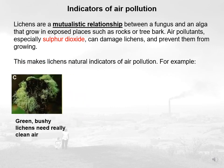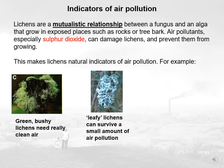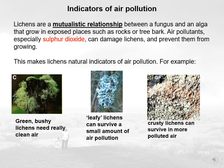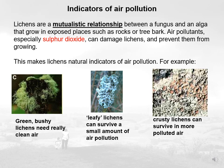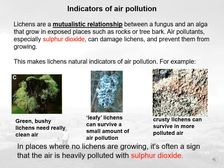This makes lichens natural indicators of air pollution. For example, green bushy lichens need really clean air. Leafy lichens can survive a small amount of air pollution, and crusty lichens can survive in more polluted air. But all three generally live in a cleaner air environment. You don't need to remember these for your exam, but you do need to remember that lichens are an indicator species. In places where no lichens are growing, it's often a sign that the air is heavily polluted with sulfur dioxide, as they are sensitive to this compound.